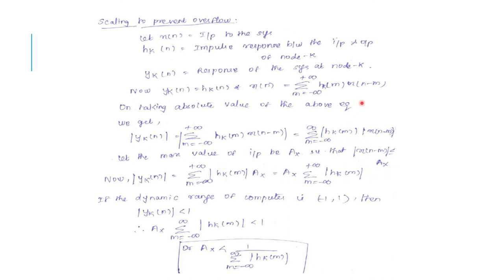Substituting the maximum allowable value A_x in place of x(n minus m), if the dynamic range of the computer is minus 1 to 1, then the modulus of y_k(n) is less than 1, which means A_x times the summation from m equals minus infinity to infinity of |h(m)| is less than 1. Therefore, A_x is less than 1 divided by the summation from m equals minus infinity to infinity of |h_k(m)|.